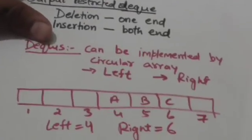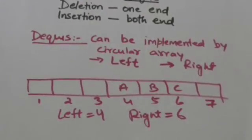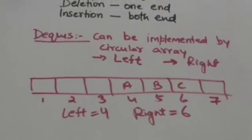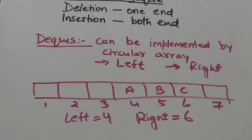Dequeues can be implemented in memory using a circular array with two variables, left and right, which contain the indices of elements at the two ends of the dequeue. Thank you very much.